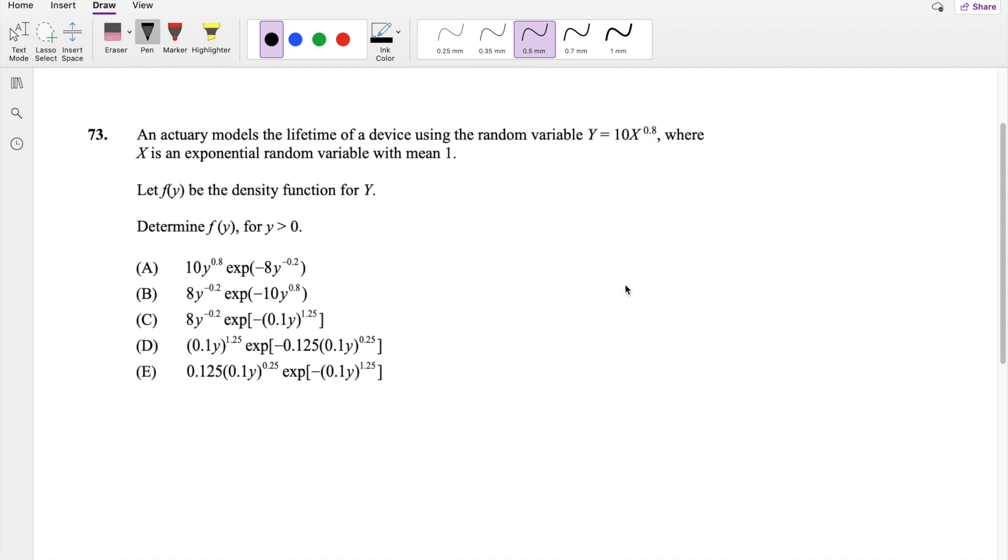So as with any other transformation problem, we're going to start off with the CDF of the function they're asking for. So that's going to be F of Y, which is equal to the probability that big Y is less than little y. And you know big Y is given by this thing right here, the probability that 10X to the 0.8 is less than y.